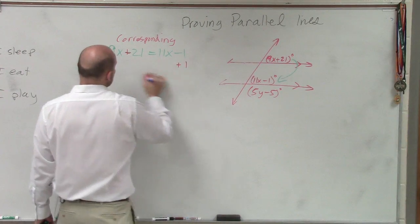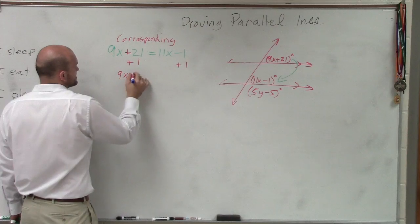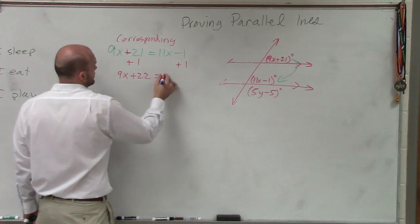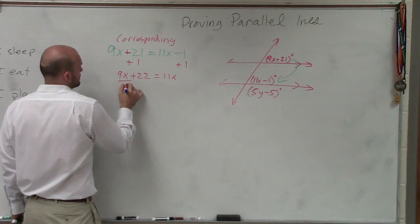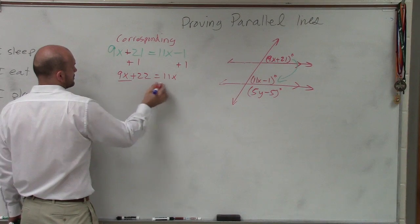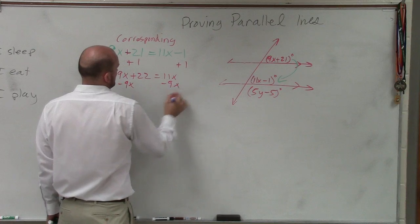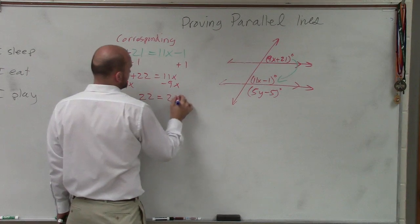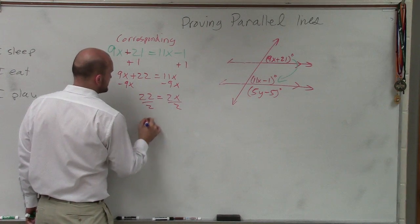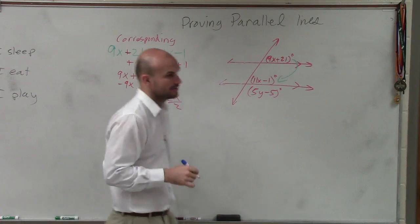So let's add 1. Add 1. So I have 9x plus 22 equals 11x. Subtract 9x. 22 equals 2x. Divide by 2. Divide by 2. X equals 11. All right?